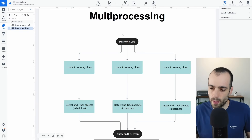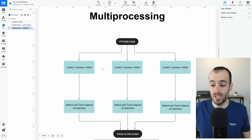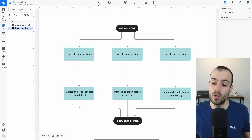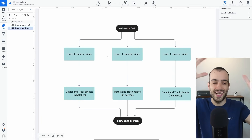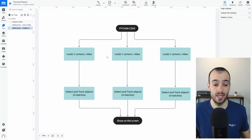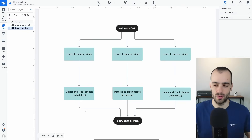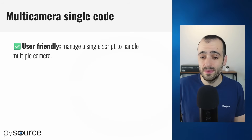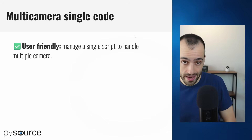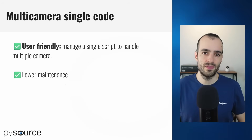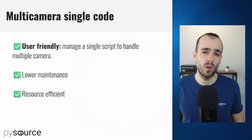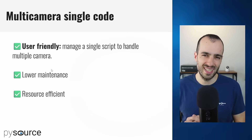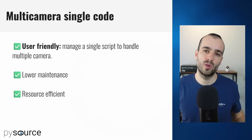The second approach — which we'll implement today — is multi-processing. A single Python script runs different processes for each camera. Each camera gets its own process with its own video capture and its own object detection model. At the end, everything is brought together on a single screen or separate screens. This is user-friendly, manageable with a single script, requires less maintenance than multiple scripts, and is more resource-efficient. The trade-off is that loading multiple models requires more VRAM memory.